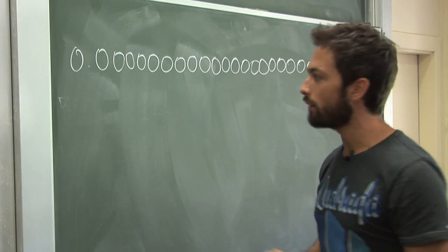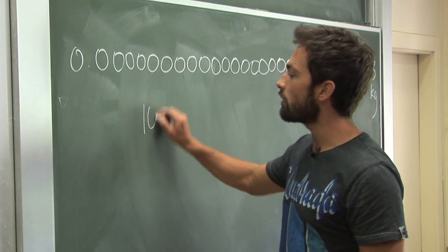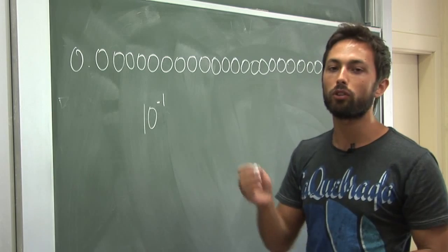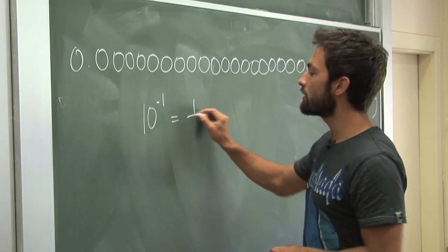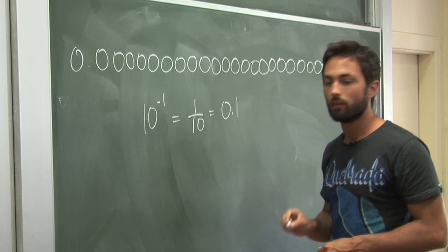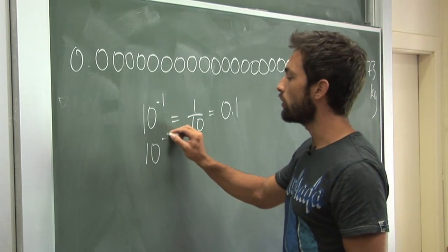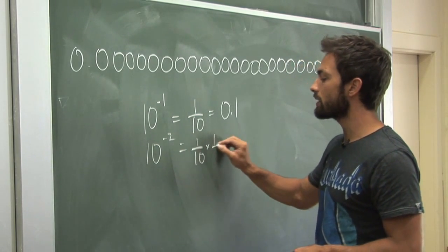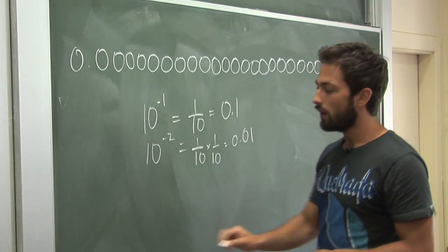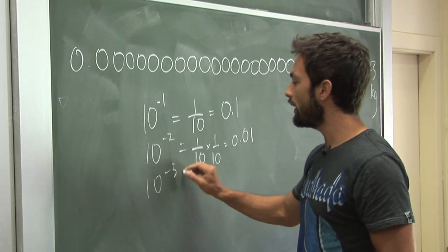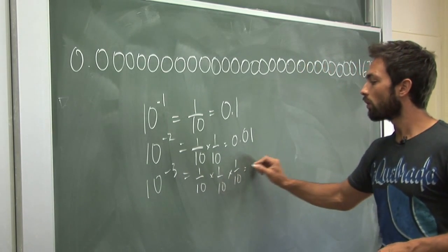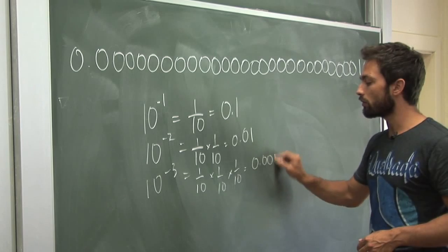Well again, it's using a similar trick. If we raise 10 to the power of minus 1, it means divide by 10, not multiply by 10. So this means divide by 10, which gives you 0.1. 10 to the power of minus 2 means divide by 10 twice, which gives us 0.01, a hundredth. 10 to the power of minus 3 means divide by 10 three times, or 0.001.